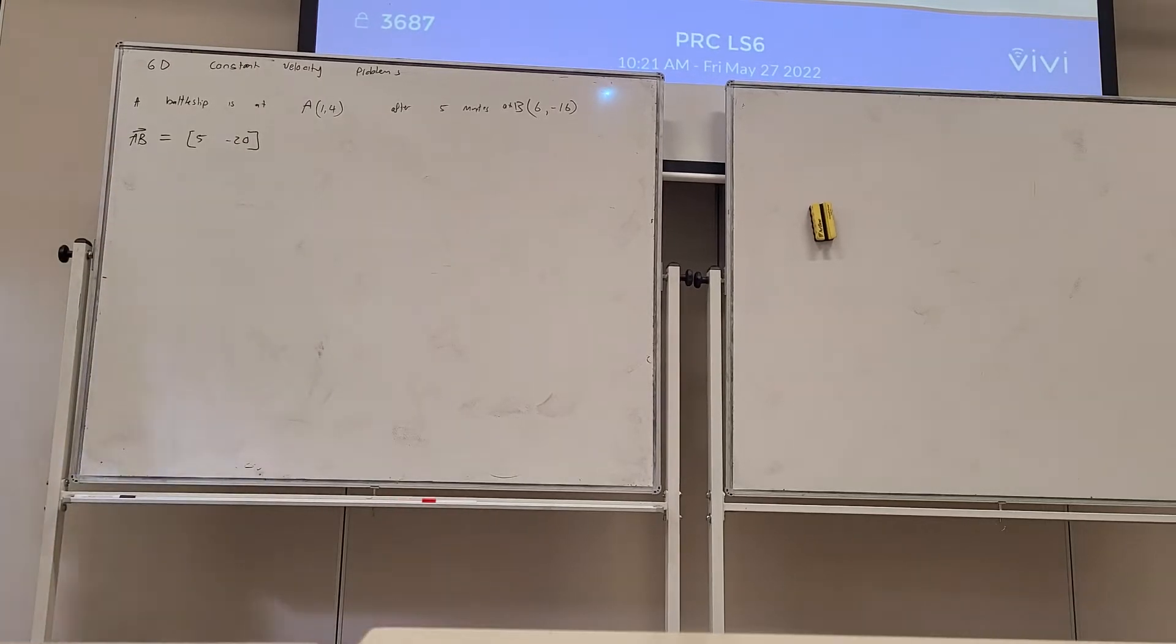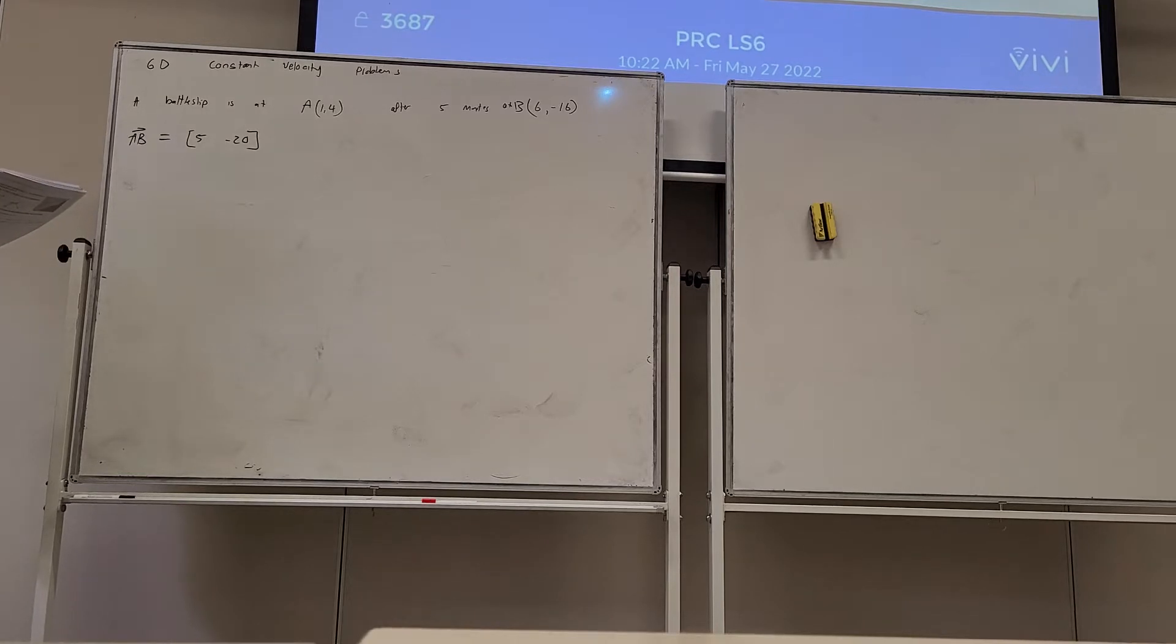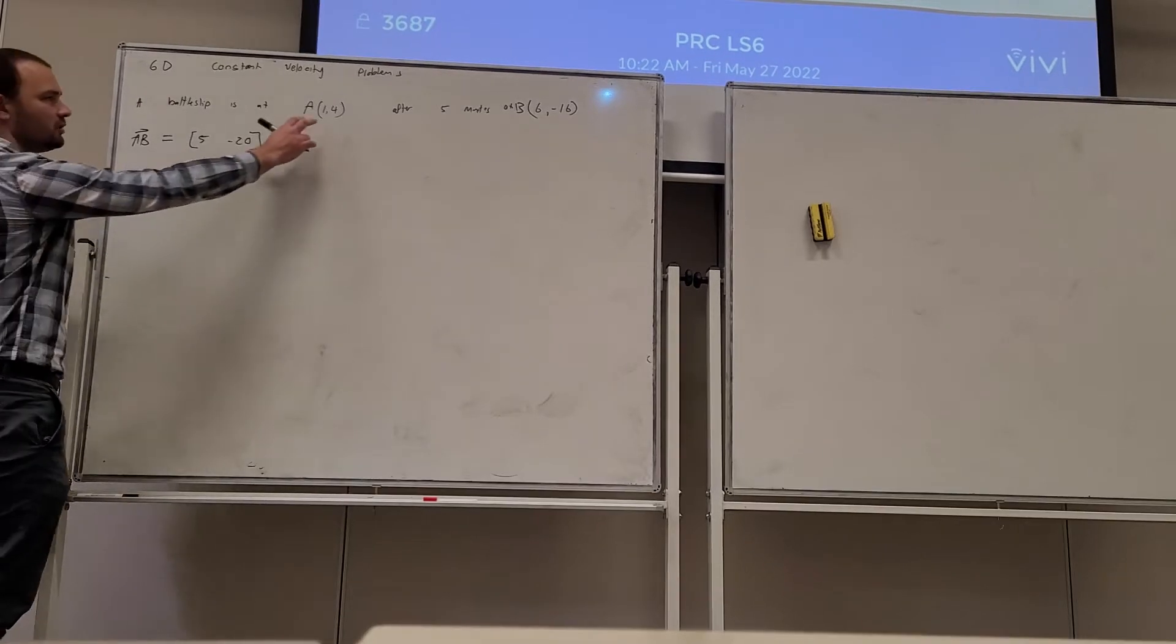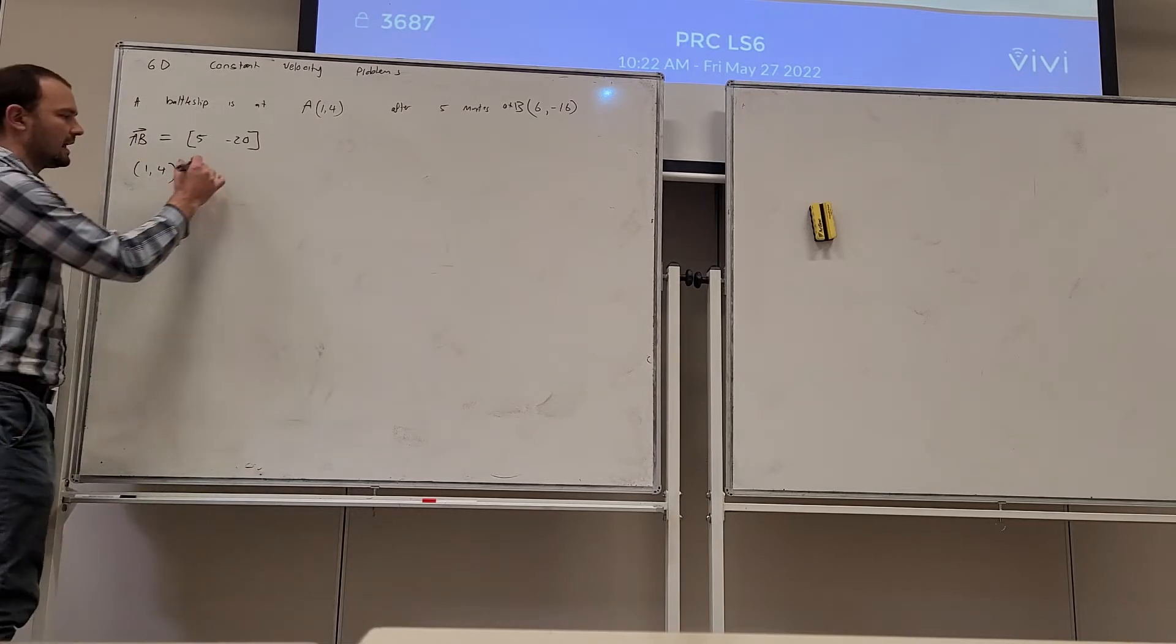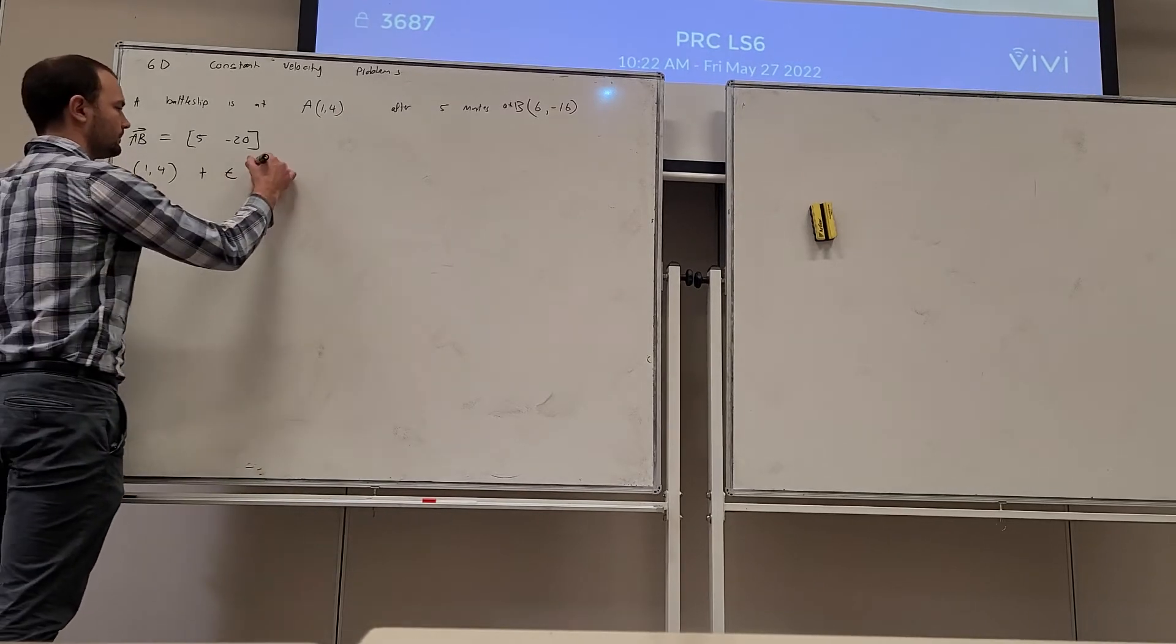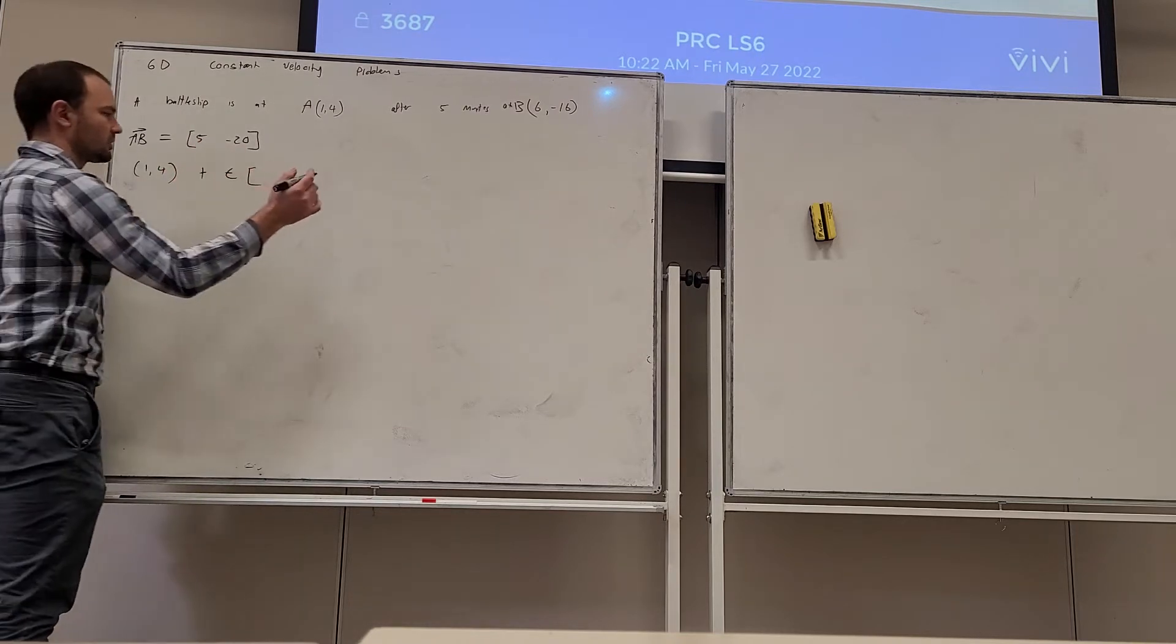So that's the direction, and for any direction vector we can leave it like that, we could divide it through by 5, etc., it's not really going to matter. And then we also want the parametric equations of it. So then the coordinate, we can use either of them but let's go with 1, 4. That's the coordinate and then plus T times by the direction vector.